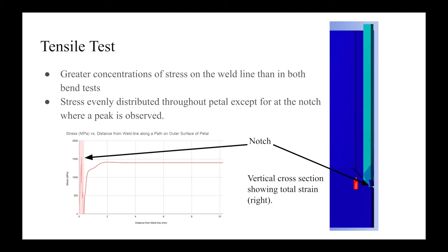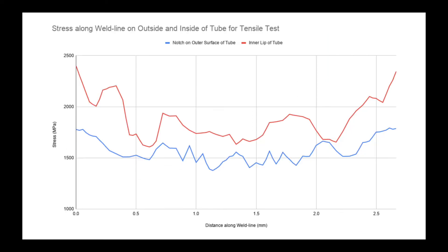Another test I conducted was a simple tensile test. In this scenario, the stress was pretty evenly distributed throughout the body of the petal but changed drastically once near the weld line. As can be seen in the plot below, the stress bottoms out to zero once it reaches the top lip of the notch, spikes to 1.5 GPa inside the notch, and then decreases back to zero. This concentration of stress would pose a much more serious risk of rupture than the other tests. A closer look inside the weld line shows that plotting stress along the length of the weld line yields a concave-up parabola shape, where stress on the inside part of the weld is higher than on the outside surface. The cause of this parabolic shape is most likely due to the curvature of the petal.